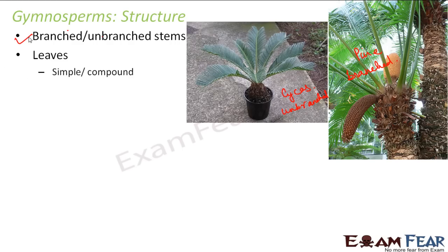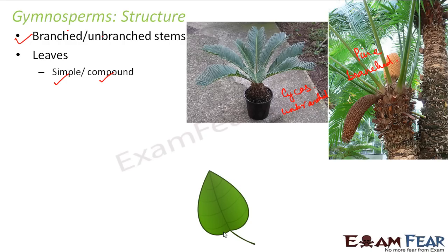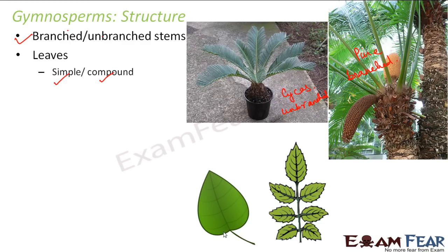Next, let us talk about their leaves. The leaves can be simple or compound. A simple leaf has a single blade, whereas in a compound leaf the blade is divided into distinct parts called leaflets. So one compound leaf has distinct leaflets.